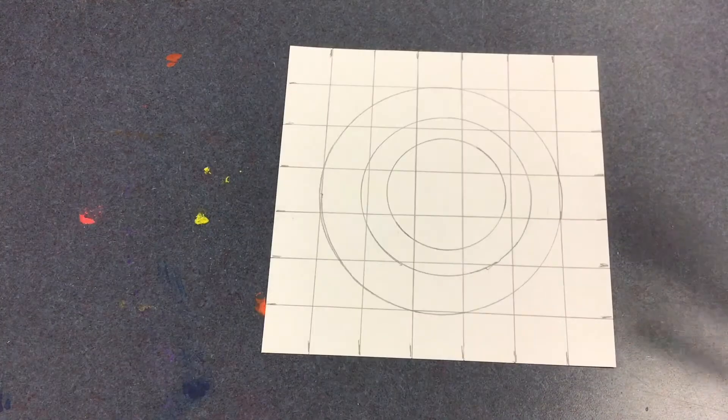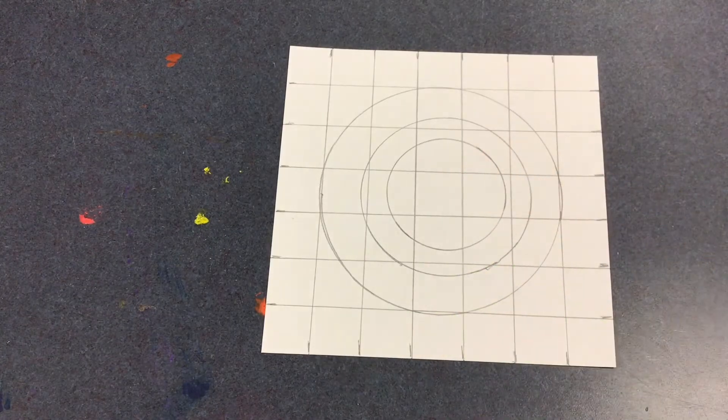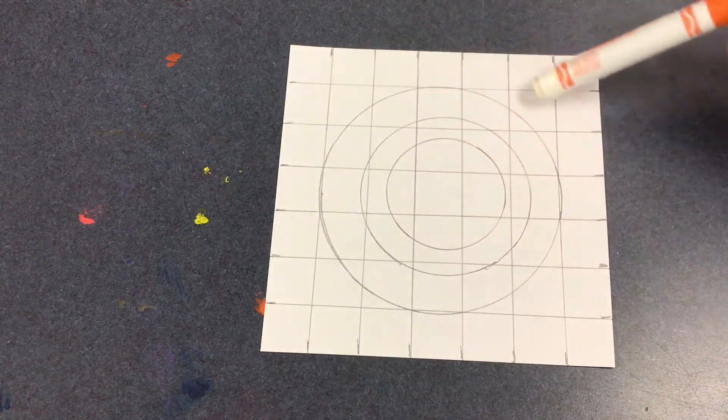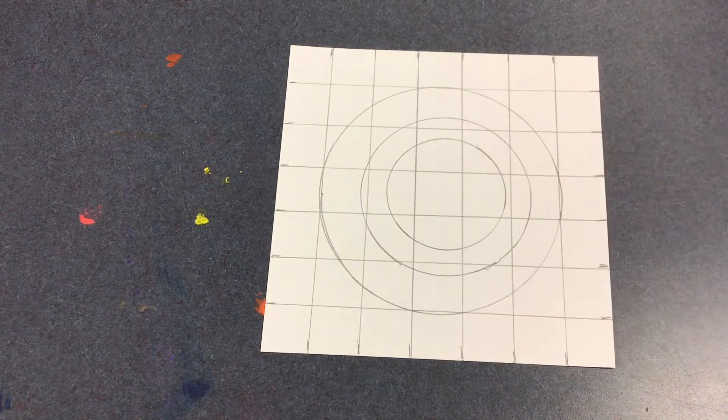Now it's time to turn this drawing into op art. Choose two colors that you think go well together. First, you'll color everything outside of the circles in a checkered pattern.